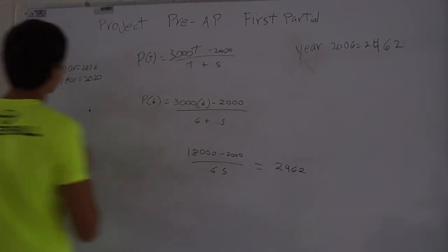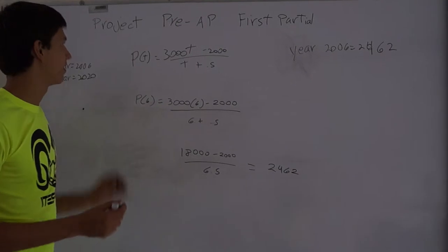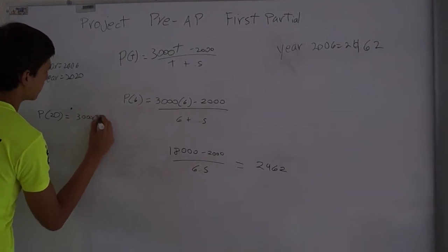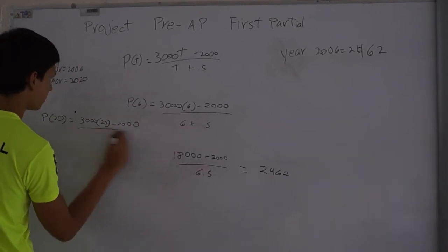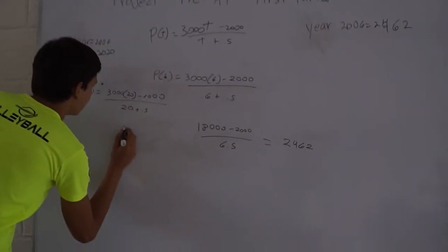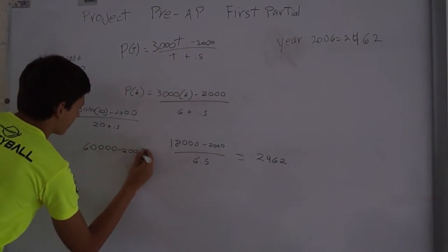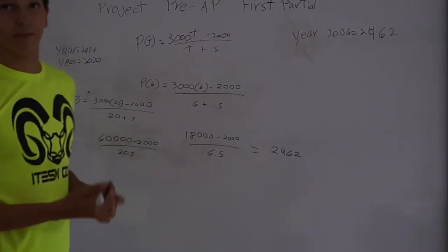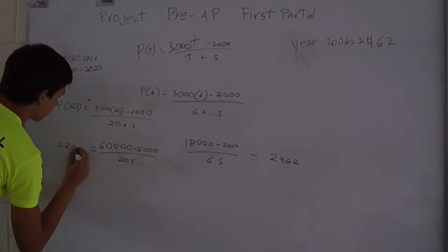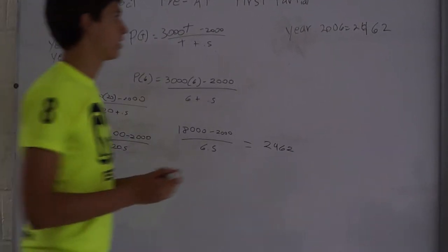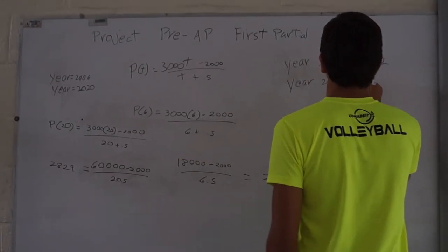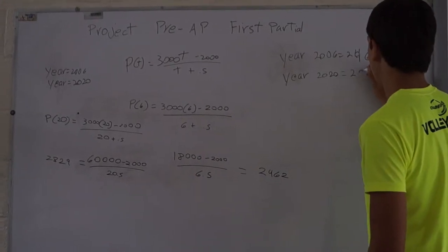Now, for the population in the year 2020, we have to do P of 20. And if we substitute like this, we get 2,920. So in the year 2020, there will be a population equal to 2,920.